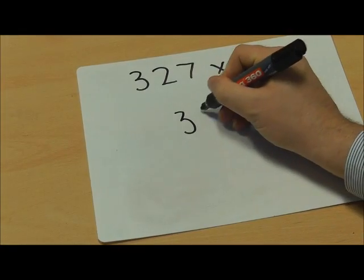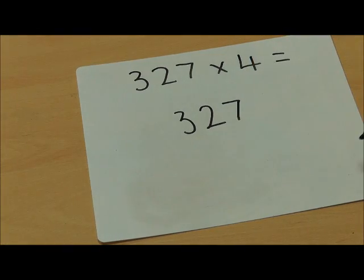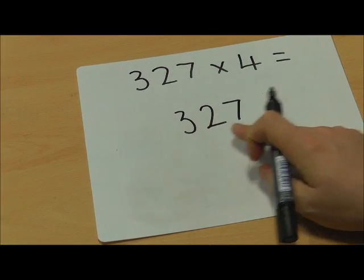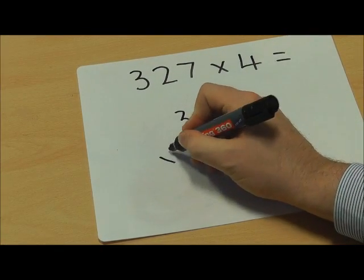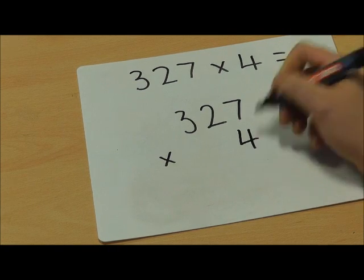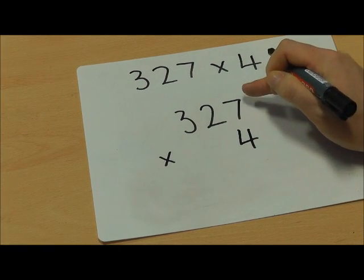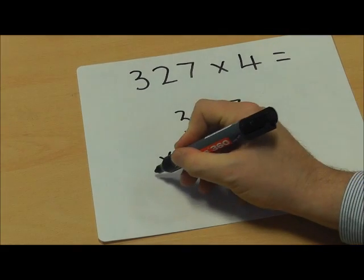We're going to put it into a column method, so I'm going to write the biggest number on top: 327 multiplied by 4. I've put the 4 in the units column with the 7 to represent that they have the same place value.